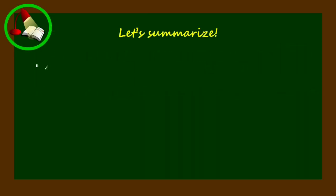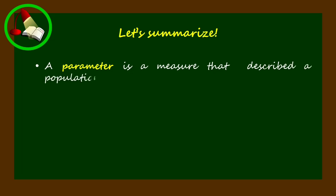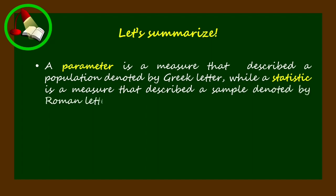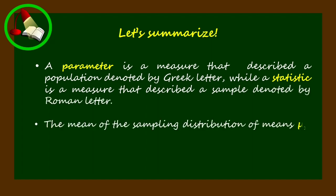Let's summarize. A parameter is a measure that describes a population, denoted by a Greek letter, while a statistic is a measure that describes a sample, denoted by a Roman letter. The mean of the sampling distribution of means mu sub x is equal to the mean of the population mu.